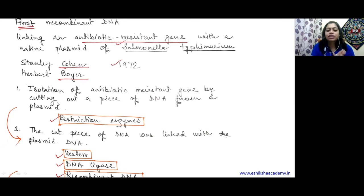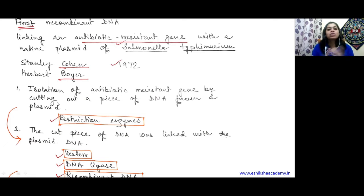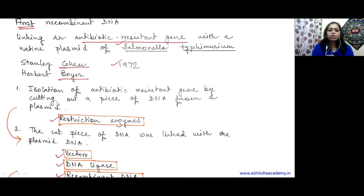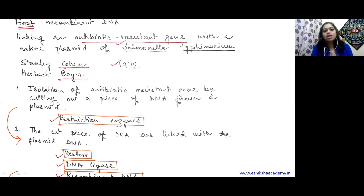Restriction enzymes are basically nucleases. In Class 11 enzymes, we know different categories of enzymes, and nucleases is one of them. Nuclease enzymes can cleave or cut nucleic acids. Similarly, restriction enzymes are endonucleases. Exonucleases cut from the end of the DNA. Endonucleases cut from within the DNA. These are two different types of nuclease: exonuclease and endonuclease. We will come back to that.